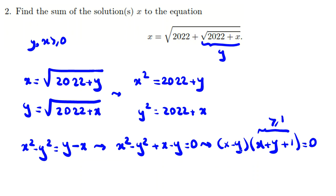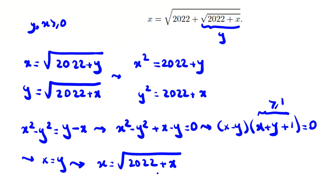Because x is greater than or equal to zero and y is greater than or equal to zero, x plus y plus one is greater than or equal to one, so it's not zero. We can conclude x equals y. If we replace y with x, then x equals the square root of 2022 plus x.